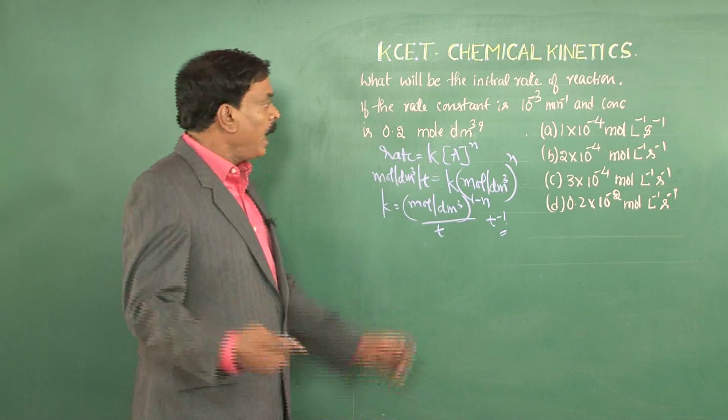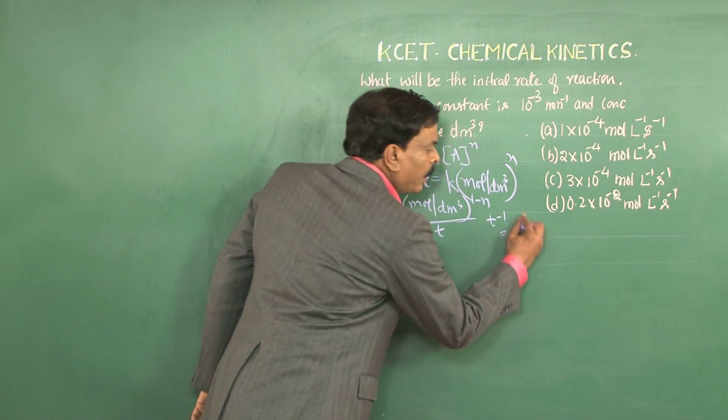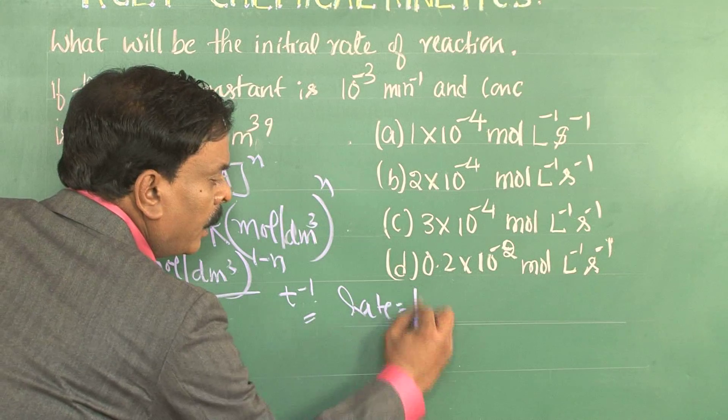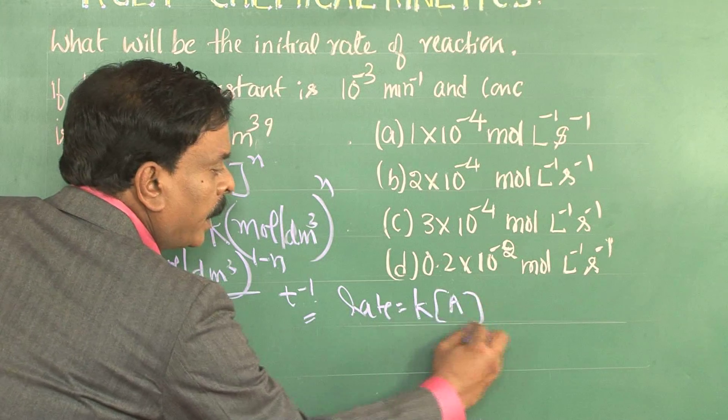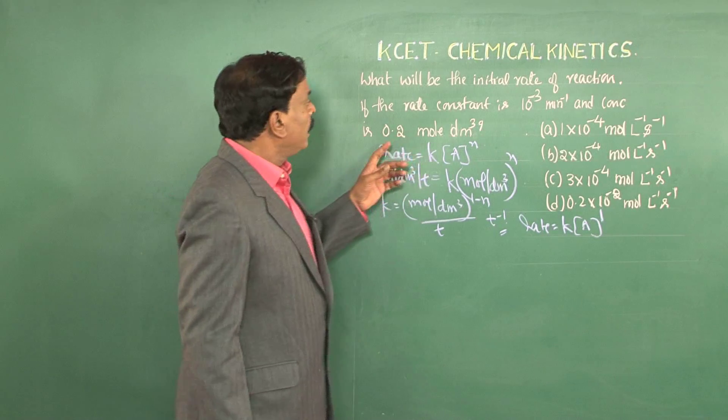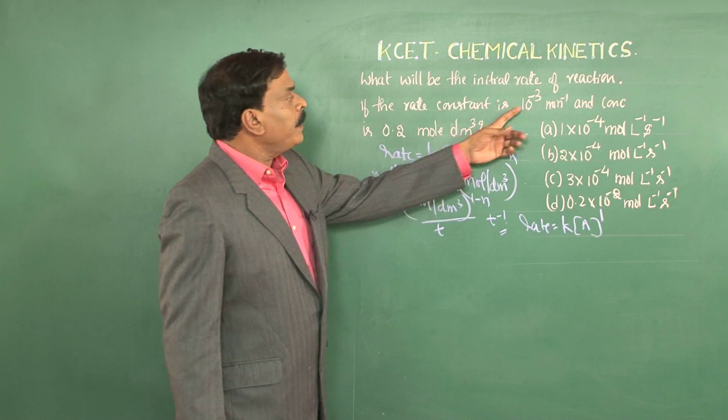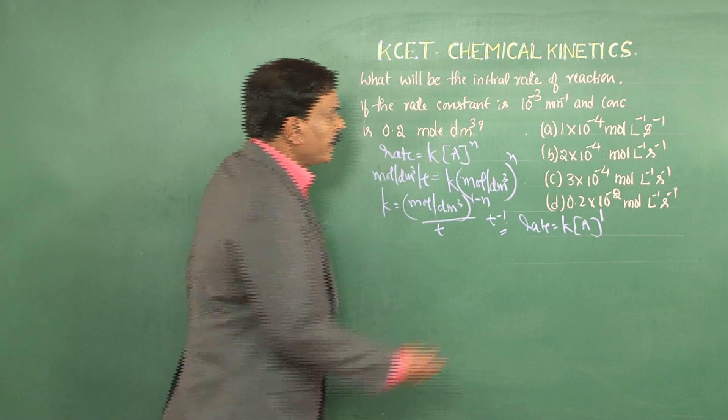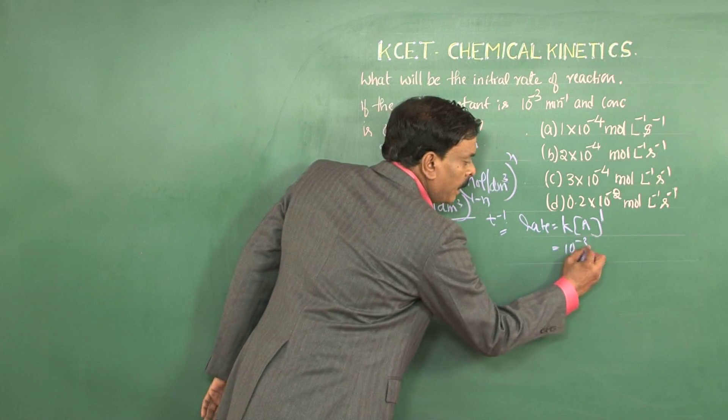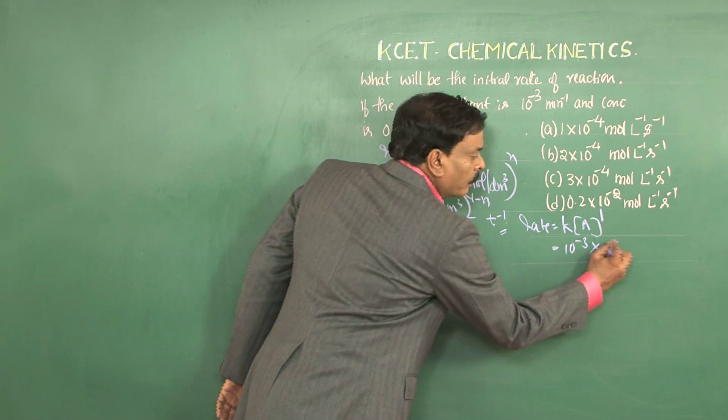After having known what the order of the reaction is, we again go back to the equation rate is equal to k into concentration of A to the power 1. In this problem, we have to find out the rate of the reaction, given the value of k which is 10 power minus 3 and you are also given the concentration as 0.2.